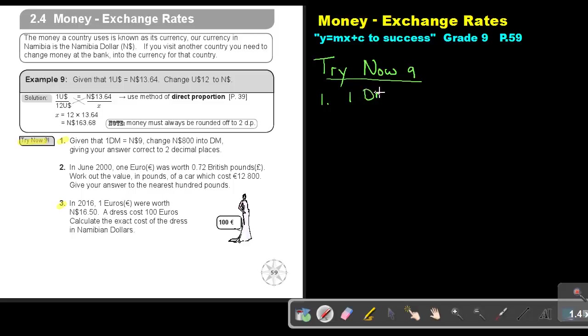So let's start. 1 Deutschmark equals 9 Namibian dollar. And then we write it underneath the Namibian dollar because it's 800 and then put an X in that position.